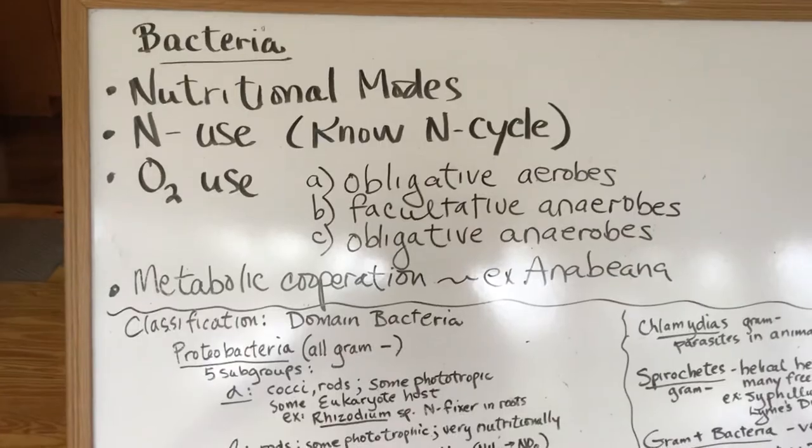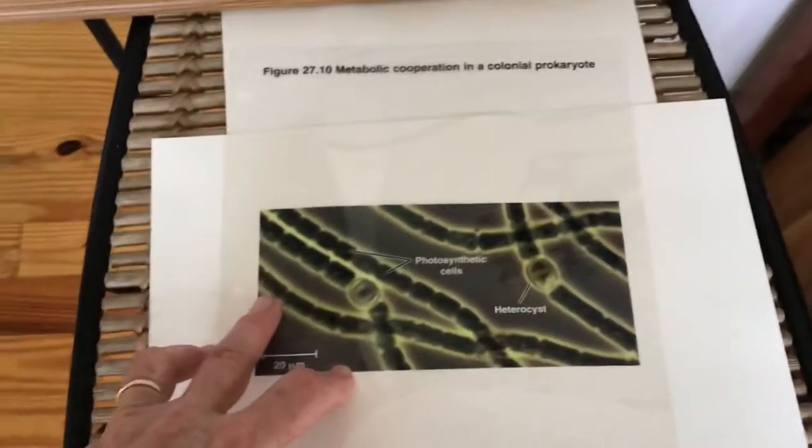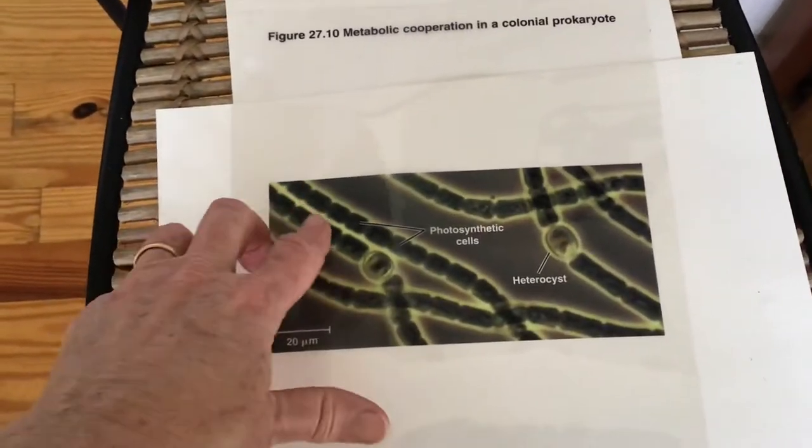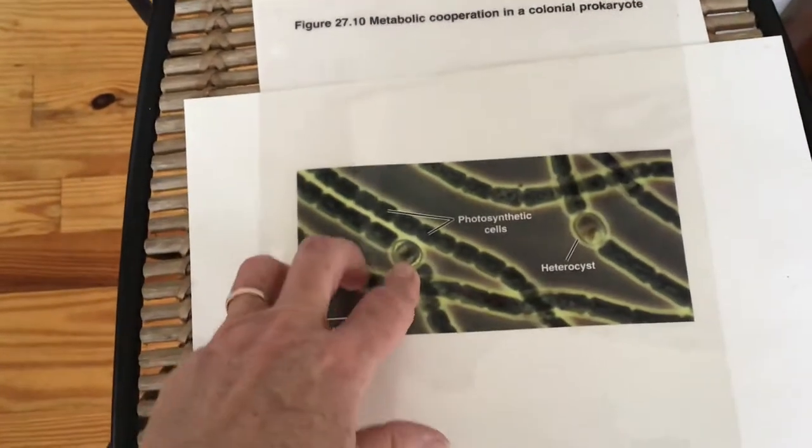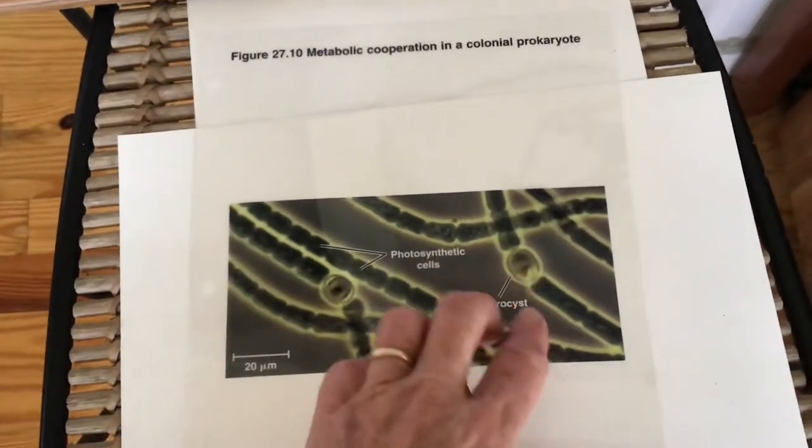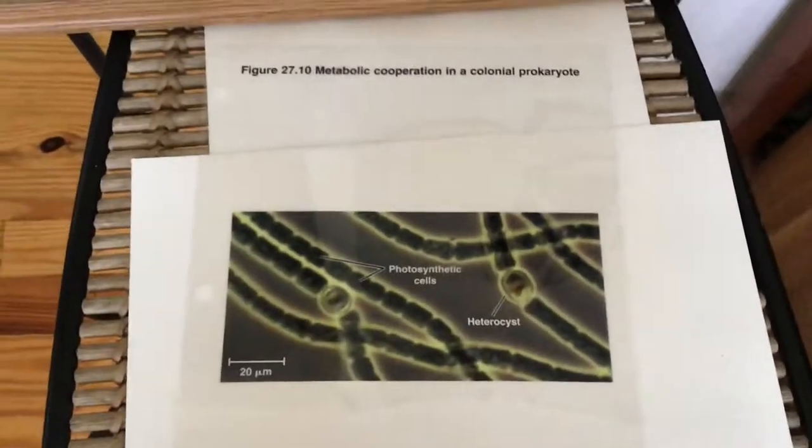Another thing to consider is some bacteria, even though they're single-celled organisms, live in colonies. One of them is called Anabaena. There's another one you might have seen in Core 1 called Nostoc. These are colonies of cyanobacteria. Most of the cells are photosynthetic, and every now and then there's another cell called a heterocyst. These heterocysts are nitrogen fixers and they will provide nitrogen for the other cells in the colony, so it's a metabolic cooperation.